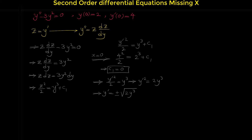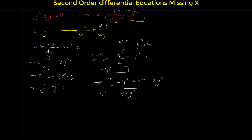Since we know that y prime at point 0 is 4, y prime is positive. So between positive square root of 2y cubed and negative square root of 2y cubed, we only accept the positive sign and reject the negative sign. It is not necessary to put the negative sign here.